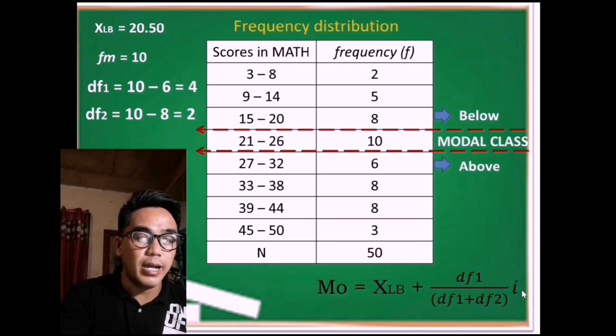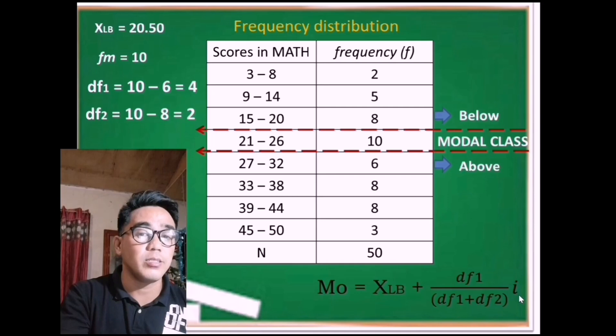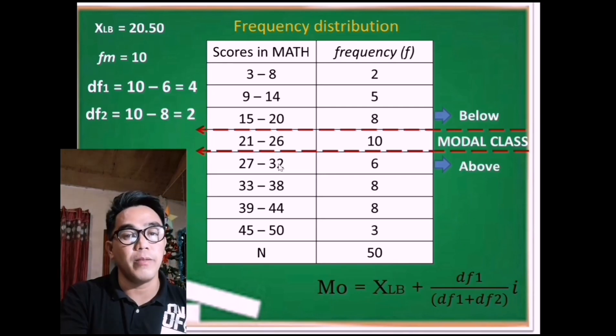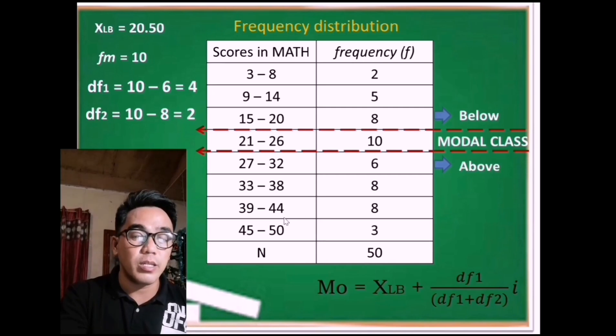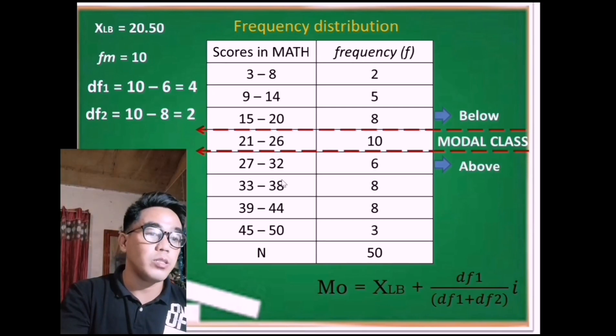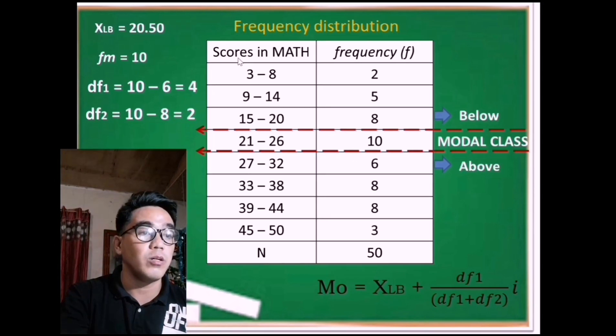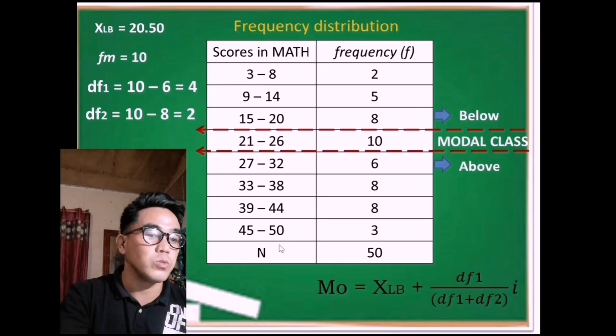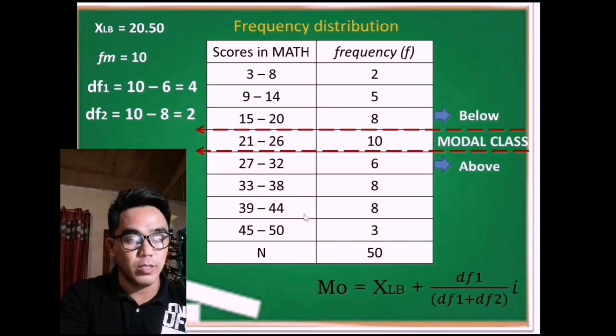Now, i. How can we get the class size or class width of the given class limit or class interval? We can get it by subtracting the upper limit to the lower limit on any class limit or class interval of the given scores in math. Like, for instance, if we subtract 50 to 45, that is 5, add 1, that is 6.